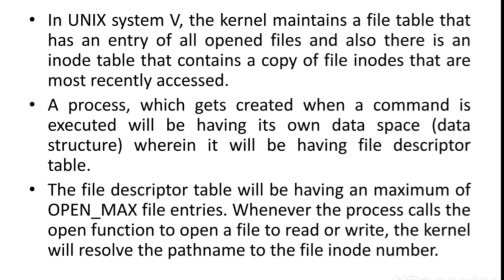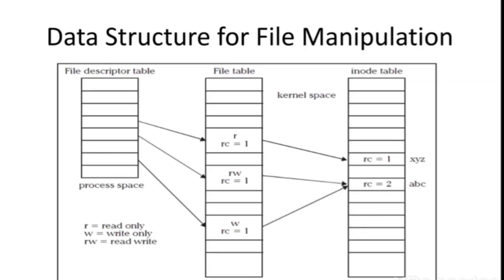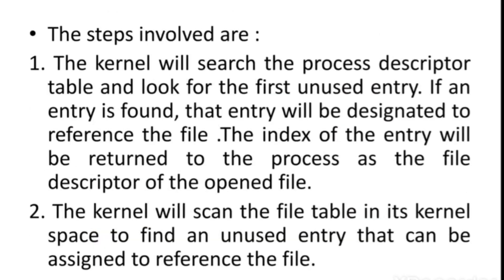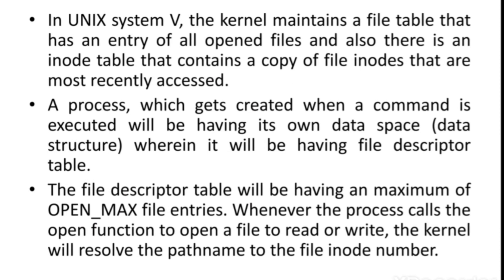These are the tables maintained by the kernel. A process also maintains a table called the file descriptor table. The kernel maintains the file table and the inode table — these are kernel space. The process maintains the file descriptor table, which is in process space. Whenever a process is created, it will be assigned its own data space and stores file descriptors of particular files there.